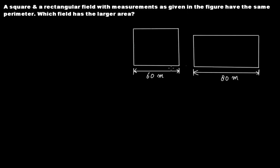In the case of the square, the length of this side is 60 meters, which means all sides are 60 meters since all sides of a square are equal. For the rectangle, this side is 80 meters, but length and breadth are not equal. So let's denote the breadth by B. We need to calculate B before we can calculate the area of this rectangle.